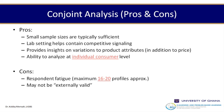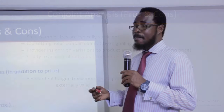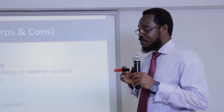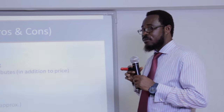Pros of conjoint analysis: a small sample size is typically sufficient; lab setting helps contain competitive signals so you know which attributes are competitive; it provides insight on variations to product attributes in addition to price; and it enables analysis at the individual consumer level for proper targeting. The cons: respondent fatigue, since you're giving them 6 to 20 different profiles to evaluate repeatedly; and results may not be externally valid.